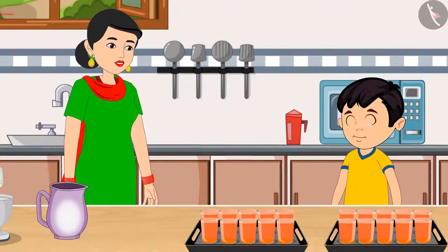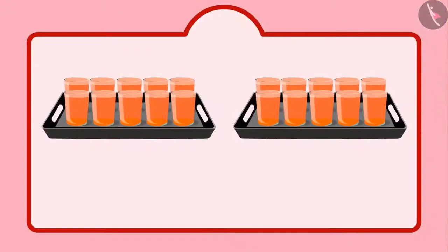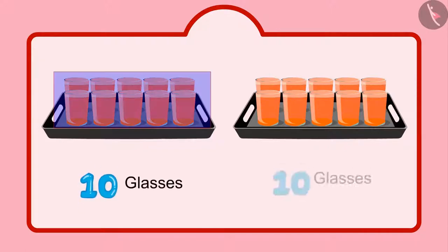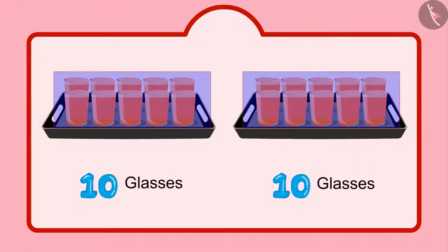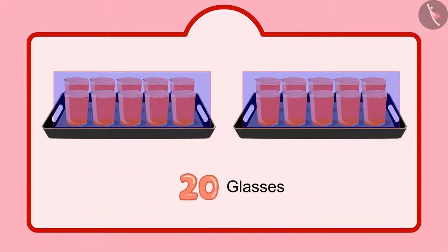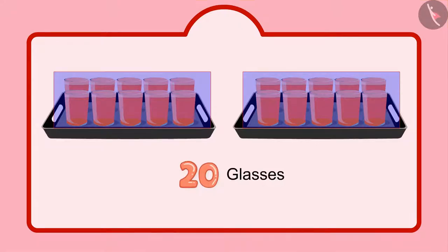Children, can you tell me how many glasses of sherbet Chotu's mother has made? Yes, you are right, children. Chotu has 2 plates of 10 sherbets each. It means 2 tens. This means Chotu has 20 glasses of sherbet.